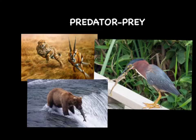Predator-prey interactions occur when a predator captures and eats prey. This relationship helps keep the number of animals in an ecosystem balanced. As the number of prey animals increases, so does the number of predators. As prey declines due to predation, disease, or other factors, the number of predators also declines. In many cases, the weaker organisms of a population become the prey, thereby strengthening the population's genetic traits for future animals to survive.